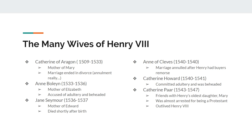The marriage is going to end in divorce when Catherine can't produce a male. Henry starts to say he thinks that Catherine and his brother slept together, because in Catholicism, if that were proven, the marriage between Catherine and Henry would have been null and void. However, no proof could be shown that they ever slept together — Catherine was actually only about nine years old when that first marriage occurred. Because no proof existed, the Pope refused to annul the marriage.